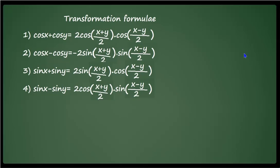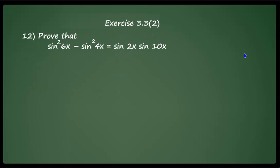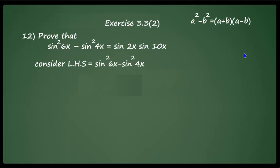Let us solve problems from Exercise 3.3. We already solved some questions in the previous video, so let us start with question 12: prove that sin²6x − sin²4x = sin 2x · sin 10x. The proof is simple — we apply the transformation formulae. Starting from the left-hand side, sin²6x − sin²4x is of the form a² − b², so we write it as (sin 6x + sin 4x)(sin 6x − sin 4x).